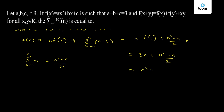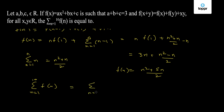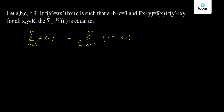So f(n) comes out to be (n² + 5n)/2. Now we need to find the value of summation f(n) for n = 1 to 10. This will be equal to summation n = 1 to 10 of (n² + 5n)/2.